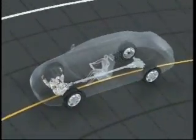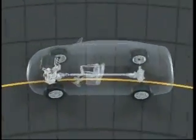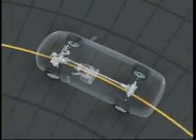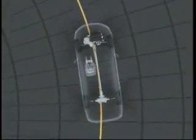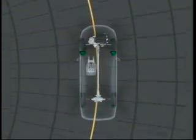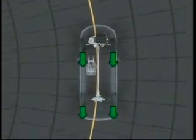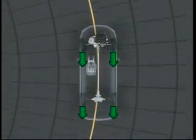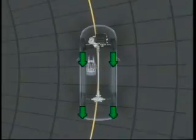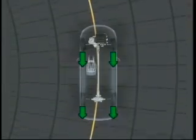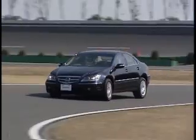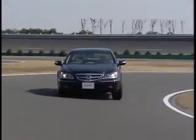Easing off on the throttle when turning can lead to oversteer, causing the vehicle to veer inside the intended line. Under these conditions, SHAWD uses the torque allocated to the rear wheels to mitigate oversteer for more stable cornering.